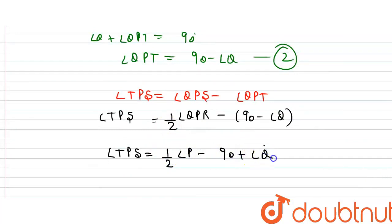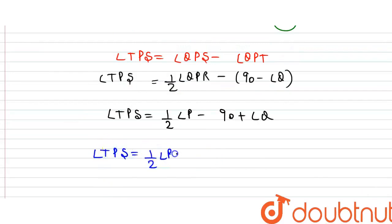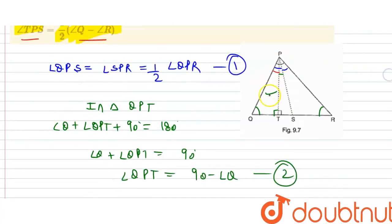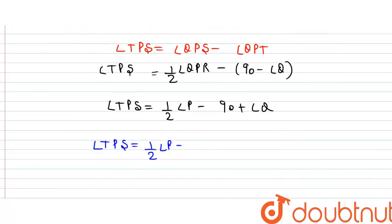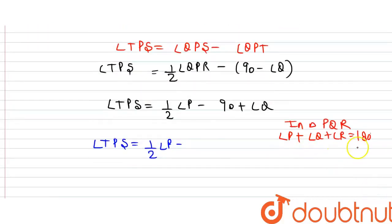So angle TPS equals half of angle P minus 90 plus angle Q. Now, in triangle PQR, angle P plus angle Q plus angle R equals 180 degrees. Multiplying by half: half of angle P plus half of angle Q plus half of angle R equals 90. I replace 90 with this value.